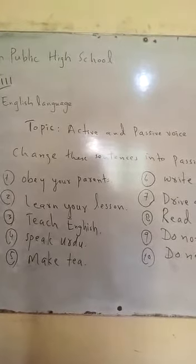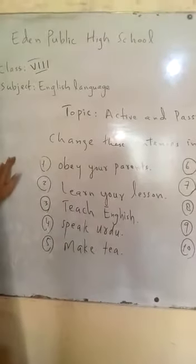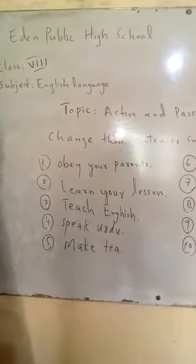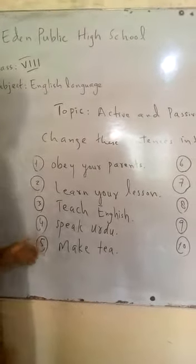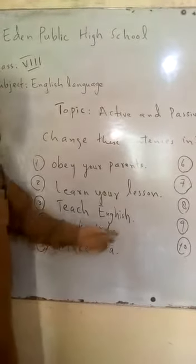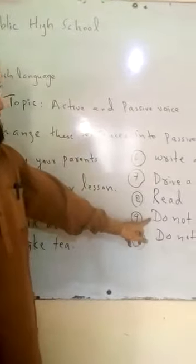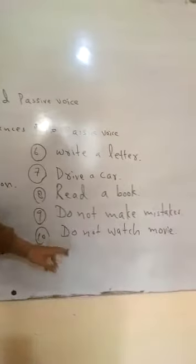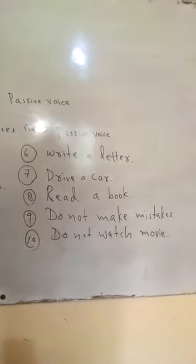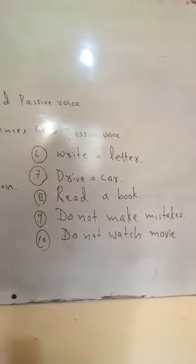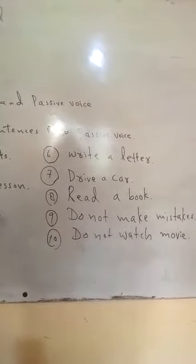For the affirmative imperative, the formula is: Let + object + be + third form of verb. For the negative — when you have sentences like 'Do not make mistakes' or 'Do not watch' — you change the active voice using the formula: Let + object + not + be + third form.